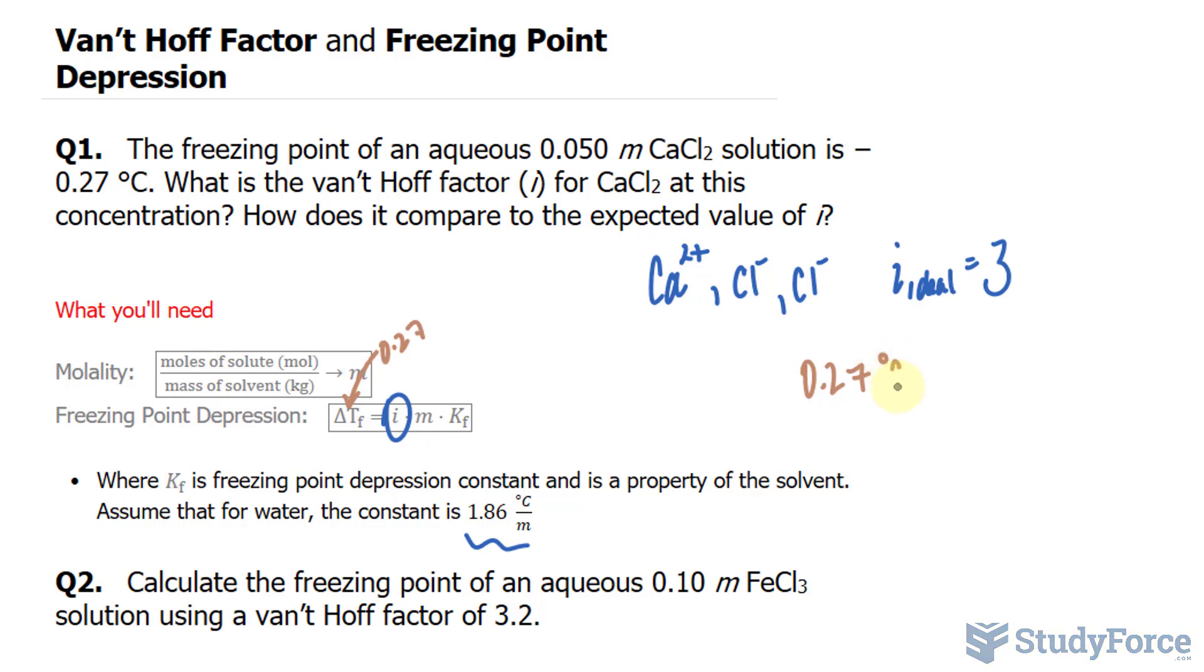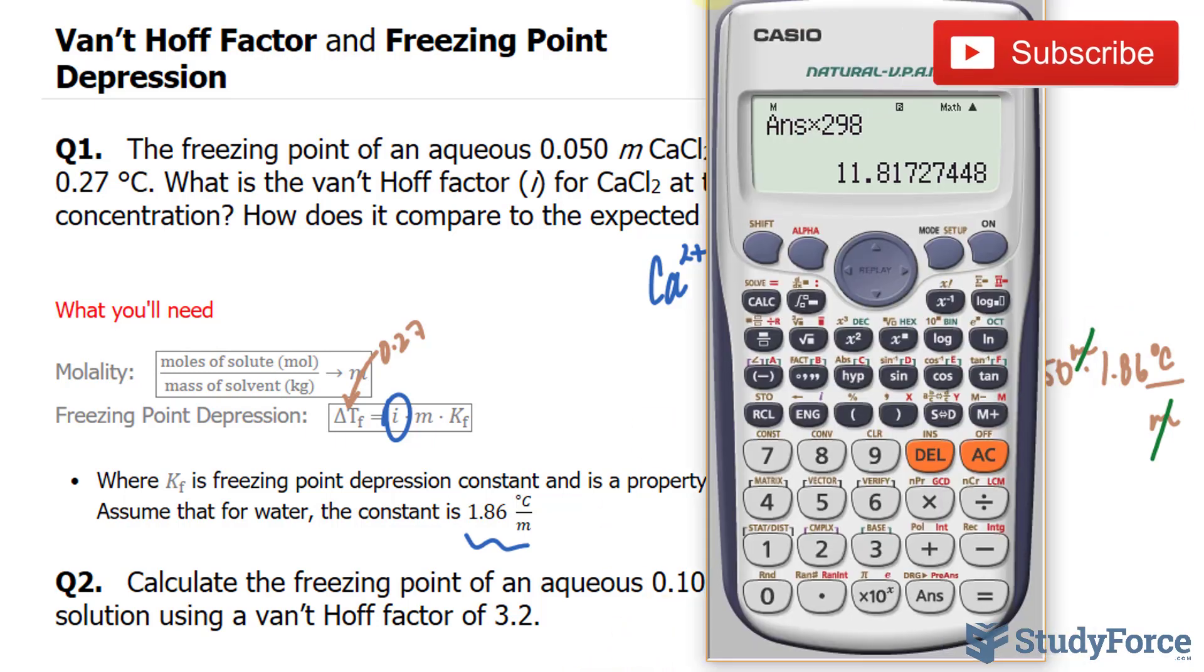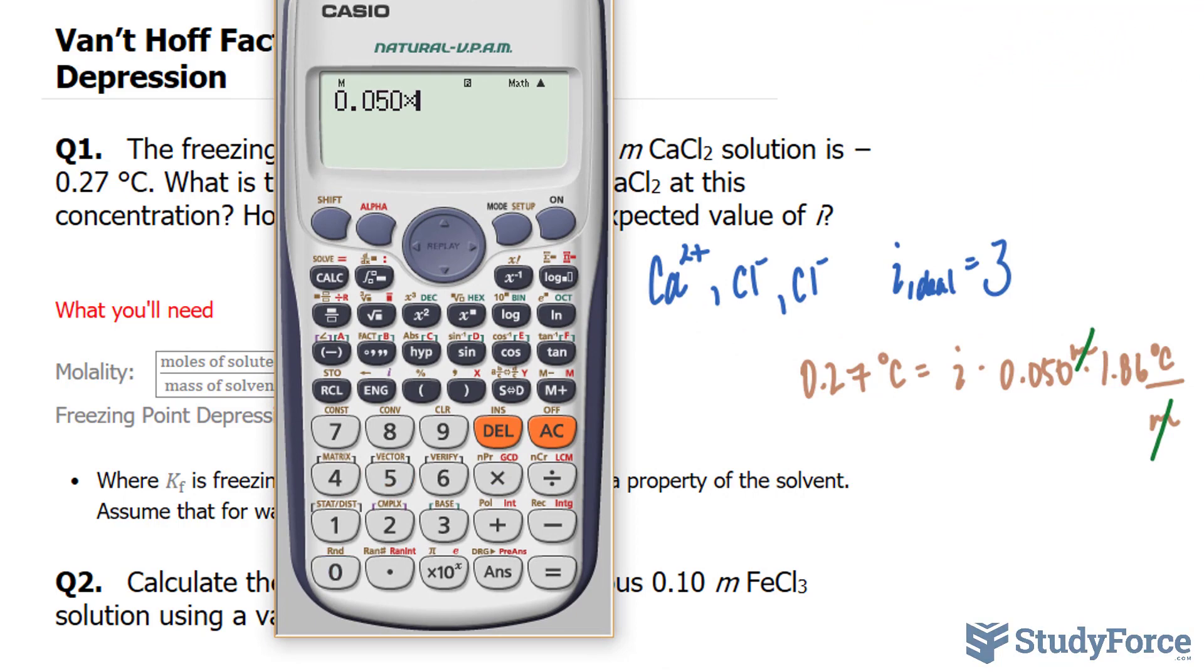0.27 degrees Celsius is equal to i, which is what we're looking for. The molality is 0.050, and the constant is 1.86, 1.86 degrees Celsius per molal. That should have the units molal, and this will cancel out. With that, we multiply these two numbers and then divide both sides by the product of those two numbers. That will cancel out the degrees Celsius. So let's go ahead and do that. 0.050 times 1.86, and I'm going to take 0.27 and divide it by that number.